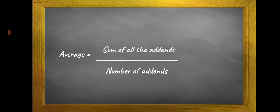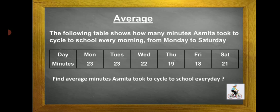The following table shows how many minutes Asmita took to cycle to school every morning from Monday to Saturday. On Monday she took 23 minutes, Tuesday 23 minutes, Wednesday 22 minutes, Thursday 19 minutes, Friday 18 minutes, Saturday 21 minutes.